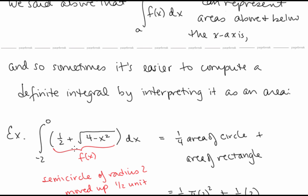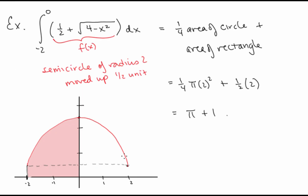But if we recognize that this function is a semicircle of radius 2 centered at the origin, shifted up by 1 half unit, we can compute the area directly. We're looking at the area under the curve from x equals negative 2 to x equals 0 — this is one quarter of the full circle plus a rectangle below. So this integral equals one quarter times pi r squared — which is pi — plus the area of the rectangle, which has width 2 and height 1 half, giving 1. So the integral equals pi plus 1.